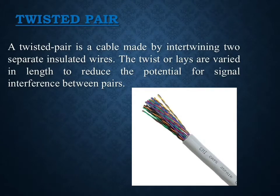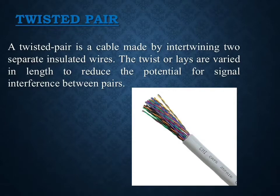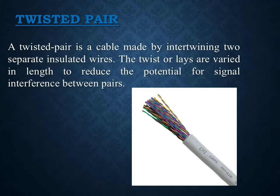A twisted pair cable is made by intertwining two separate insulated wires. The twist layers are varied in length to reduce the potential for signal interference between the pairs, because you don't want disruption when transmitting an internet connection — the signal could slow or keep dropping. So you want to pay attention to the cable length used between devices.